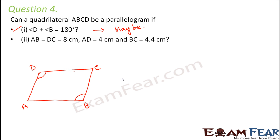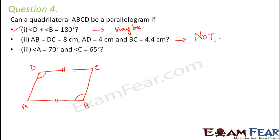For the second criterion: can a quadrilateral be a parallelogram if AB equals DC equals 8 cm but AD equals 4 cm and BC equals 4.4 cm? This means one pair of opposite sides is equal but the other pair is not — so it cannot be a parallelogram, since in a parallelogram all opposite sides must be equal. Similarly, if angle A equals 70 degrees and angle C equals 65 degrees, the opposite angles are unequal, so it can never be a parallelogram.